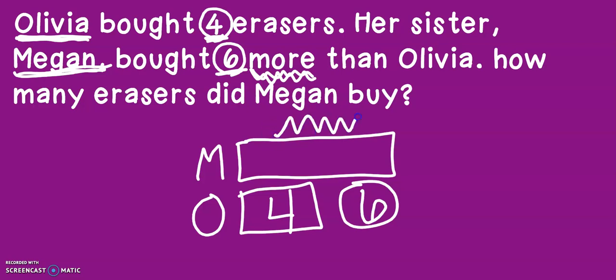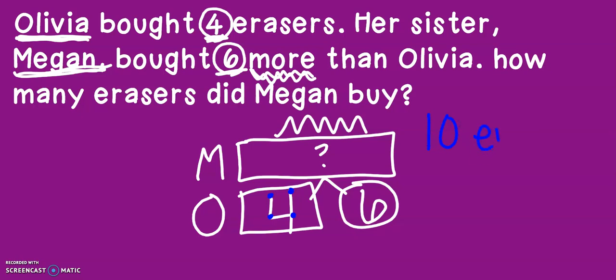Now we are ready to plug in our numbers. We know that Olivia has four erasers and Megan bought six more. A number with 'more' or 'fewer' goes in our special circle at the bottom. That means in this problem, our missing number is at the top of our math mountain. If the missing number is at the top, I need to add six and four: counting up — 6, 7, 8, 9, 10. That means Megan has ten erasers.